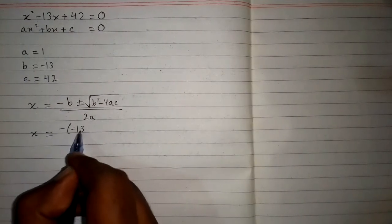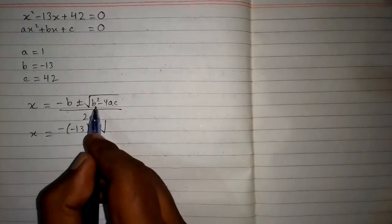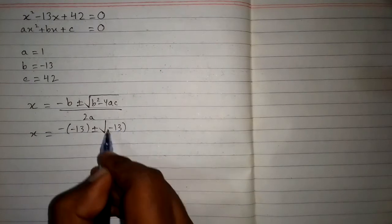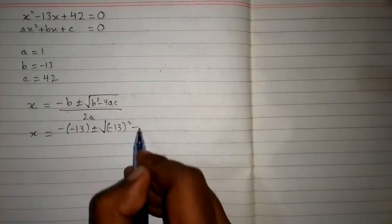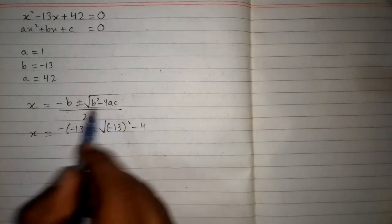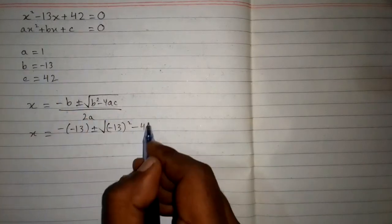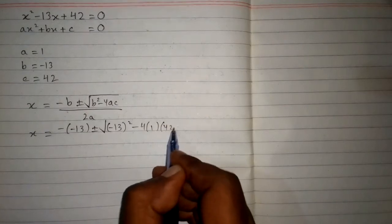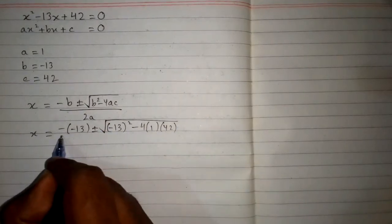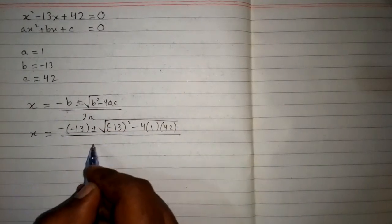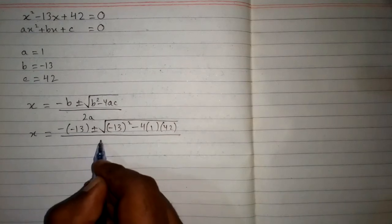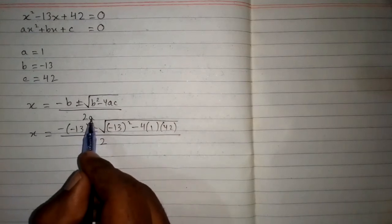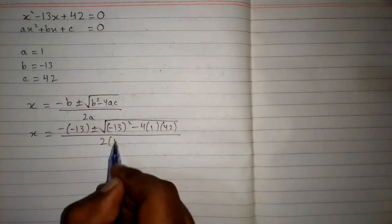The value of b is minus 13, so we put minus 13 and then plus minus square root of b squared, again putting minus 13, and then minus 4 times a, which is 1, times c, which is 42, all upon 2 times a, which is 1.